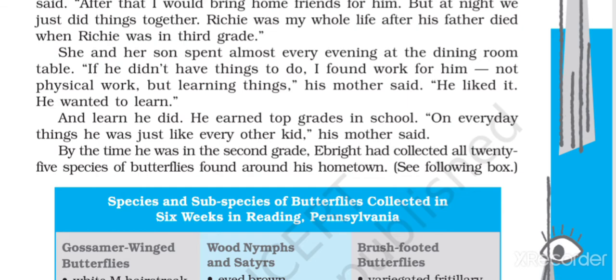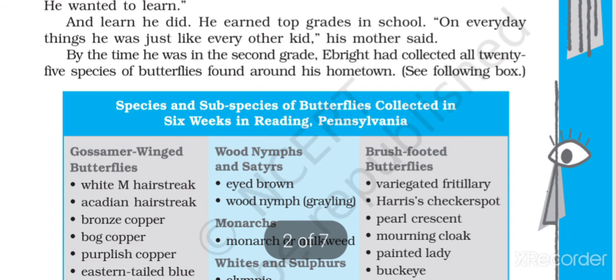And learn he did. He earned top grades in school — he was a topper in his class. On everyday things, he was just like every other kid, his mother said. So his daily routine was the same as any other child. He was not extraordinary in that sense, but he had a brilliant mind. By the time he was in second grade, Ebright had collected all 25 species of butterflies found around his hometown.